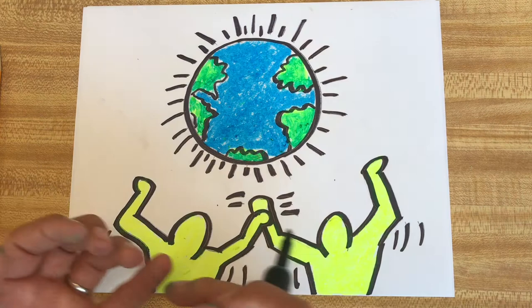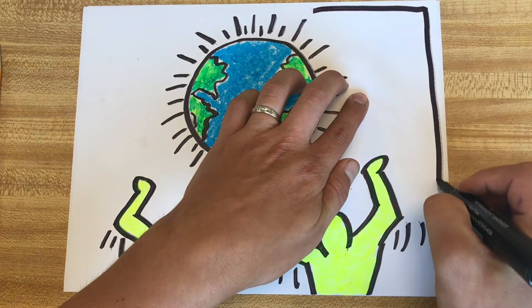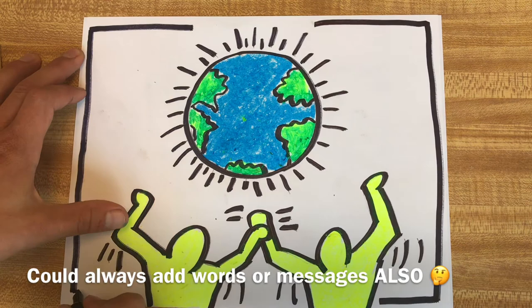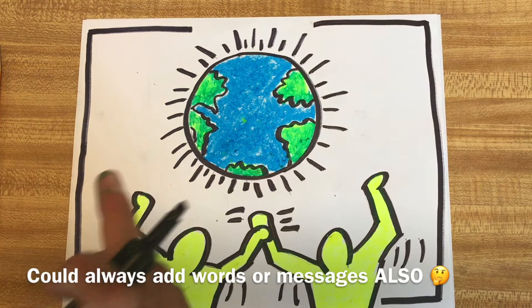And then this one over here is going to have one, two, and three right there. And just by adding that, it really frames it in and makes it look like a little bit more finished of a piece, but I am not finished because I'm going to fill in this with some of my, I think I'm going to do my neon orange there. I think that'll look good all together.